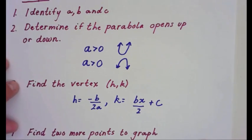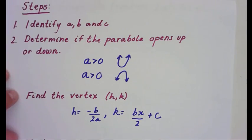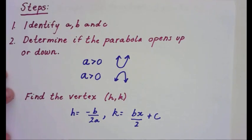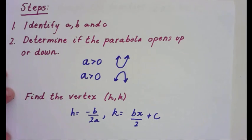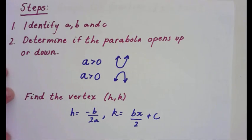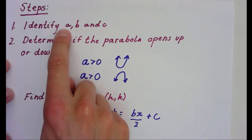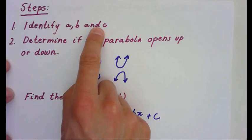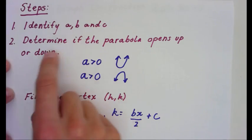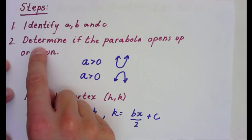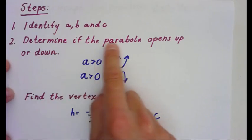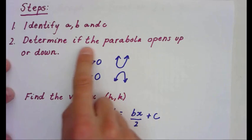When I think about graphing in standard form, there's a bunch of ways to do it. I'm going to show you a shortcut I learned. You can always make a table of values, but the first thing I want to do is identify my values for a, b, and c. From here, determine if the parabola opens up or down.